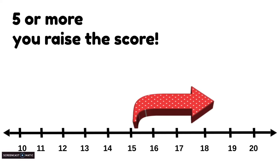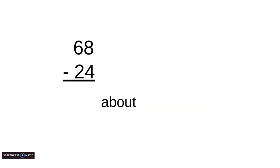I have 68 minus 24. Let's see the estimates. 68 ends with an 8. 8 is 5 or more, so we're raising the score to 70. Next is 24. 24 is 4 or less, so we're going to let it rest. So we're going to use the smaller number. So we'll think about, is it 20 or 30? And it will be 20. So 70 minus 20.